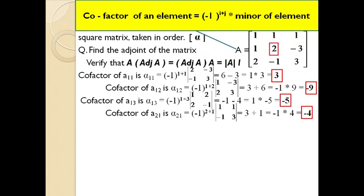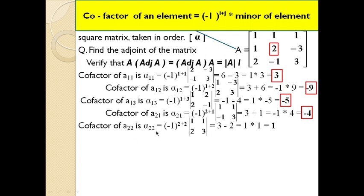Next element in the second row, second column: α₂₂ = (−1)^(2+2) × minor. The remaining submatrix is [1, 1; 2, 3]. Cross-multiplying: 1×3 − 1×2 = 3 − 2 = 1. Since (−1)^(2+2) = (−1)^4 = 1 (even, positive), the cofactor α₂₂ = 1 × 1 = 1.